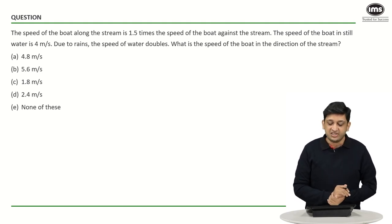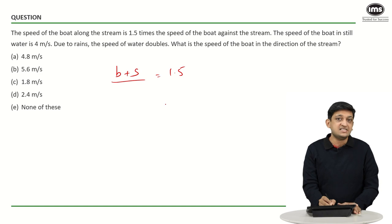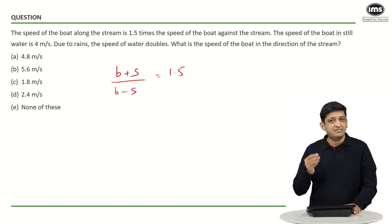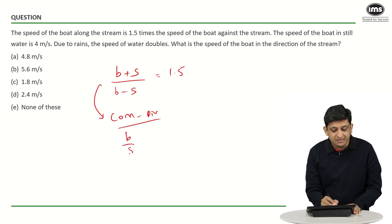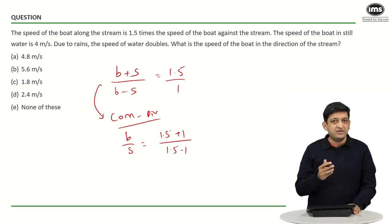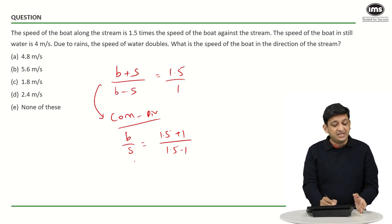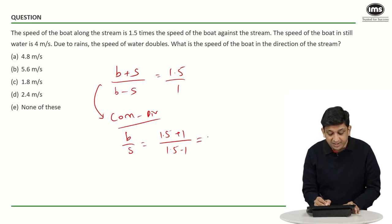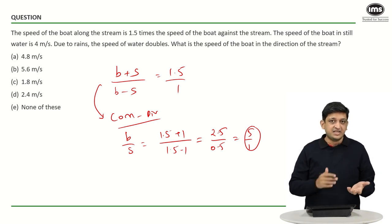The shorter method here: the speed of the boat along the stream — that is, speed of boat plus speed of stream — is 1.5 times the speed of boat against the stream. So you can say B plus S upon B minus S equals 1.5. If you apply componendo and dividendo here, you directly get B by S equals 1.5 plus 1 upon 1.5 minus 1. So the ratio of boat speed to stream speed is 2.5 upon 0.5, or 5 is to 1. If the speed of the boat is 5 units, then the speed of the stream becomes 1 unit.